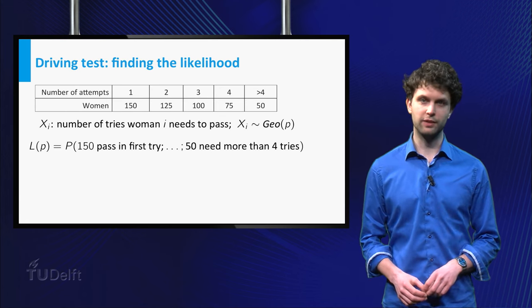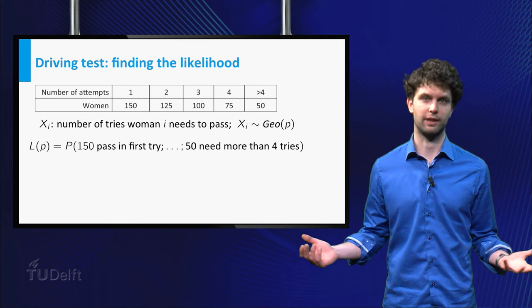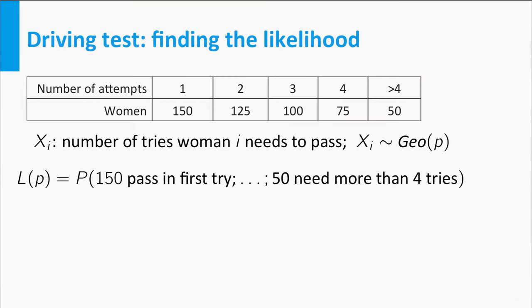The probability of observing the data is the probability of having 150 women pass at once, 125 women in two tries, etc. By independence we get this expression, where the constant C is the number of ways we can assign 150 ones, 125 twos, etc. to 500 women. The value of C is irrelevant, as we will soon see.